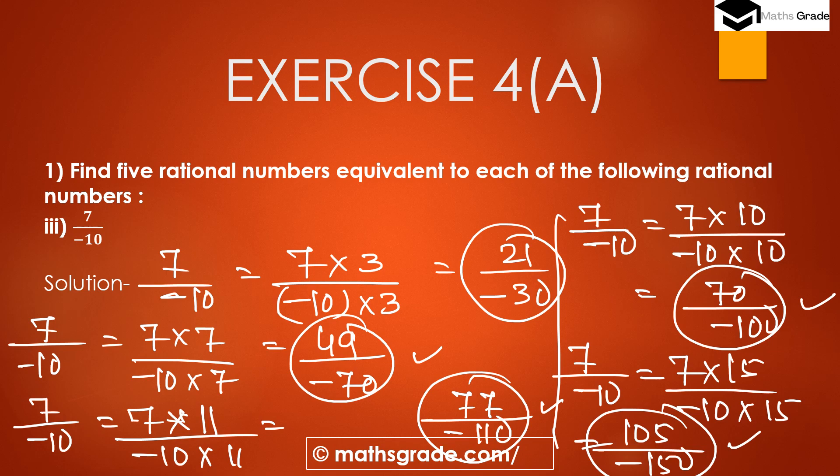So the 5 equivalent rational numbers of 7/(-10) are: 21/(-30), 49/(-70), 77/(-110), (-70)/(-100), and 105/(-150).